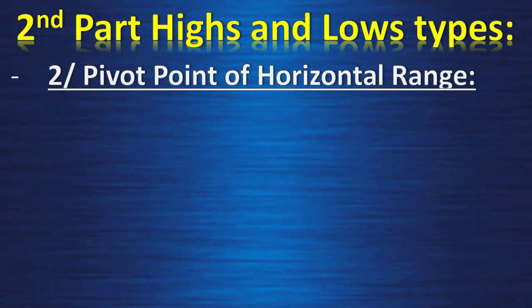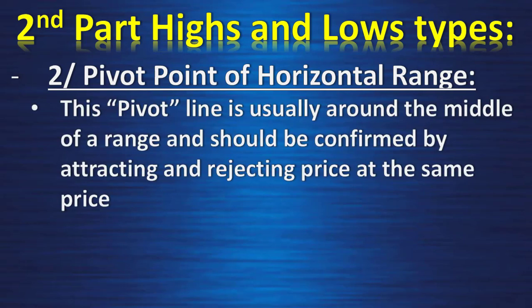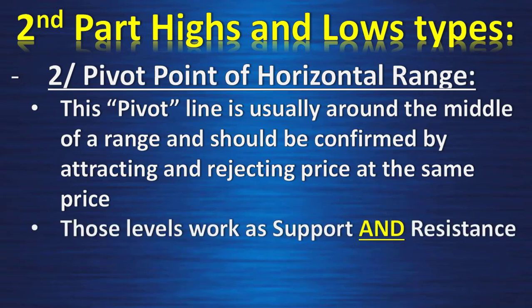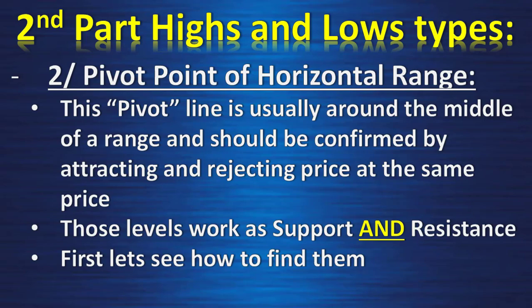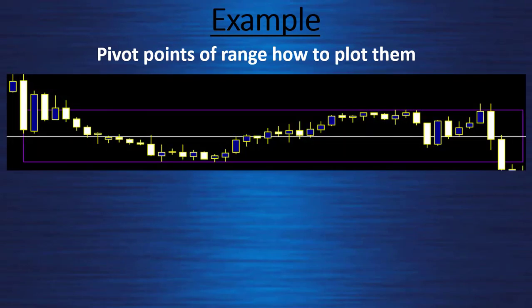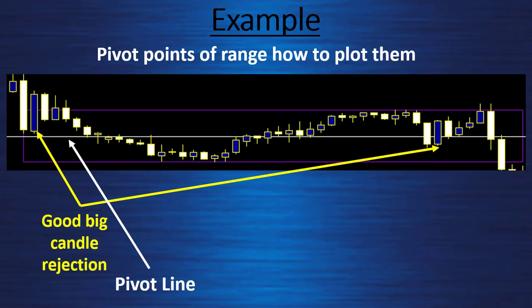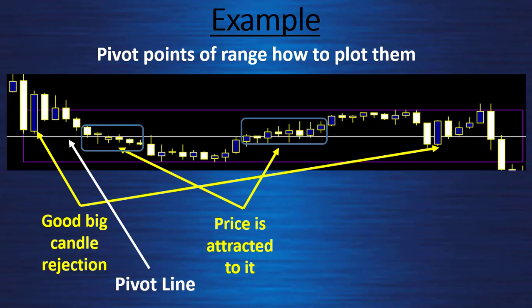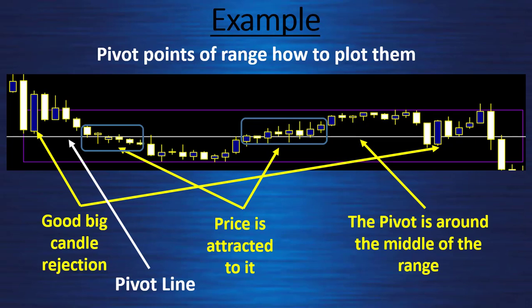Second point: pivot point of horizontal range. This pivot line is usually around the middle of a range and should be confirmed by attracting and rejecting price at the same point. Don't mistake it for the pivot points indicator on MetaTrader 4 — this is different. Here is a tight range, and the white line is my pivot line. We have good big candle rejection at those two points, price is attracted to it in those two specific ranges, and the pivot line is around the middle of this specific range.